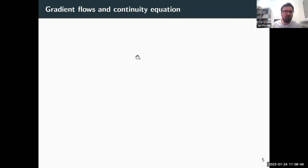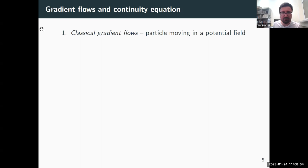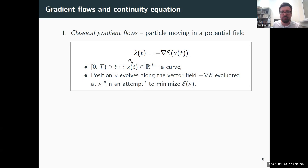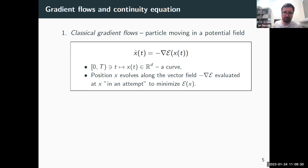Let me discuss the relation between gradient flows and the continuity equation. Beginning with the classical notion: a position x evolves in time according to an ODE, where x is a curve in R^d and this position evolves in the opposite direction of the gradient of an energy E — an attempt to minimize the energy. Whether it succeeds in minimizing energy is not guaranteed, but sometimes it can.